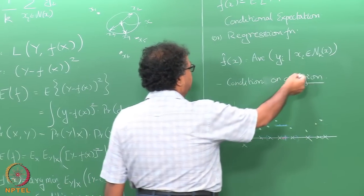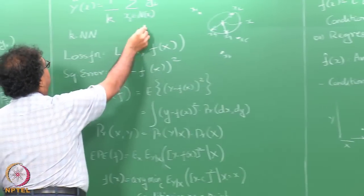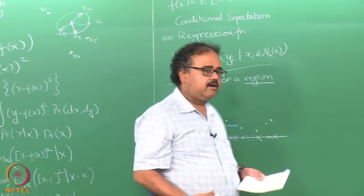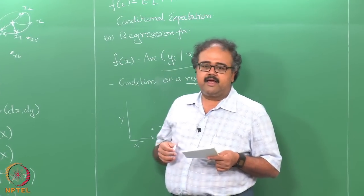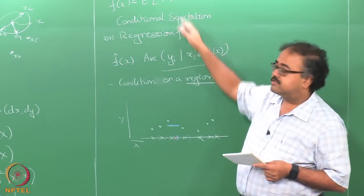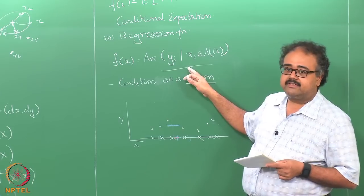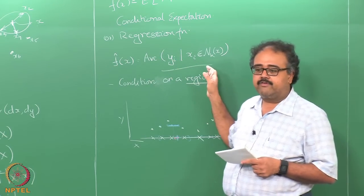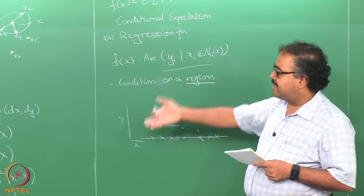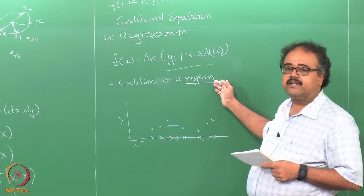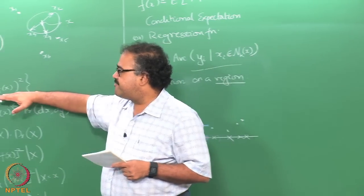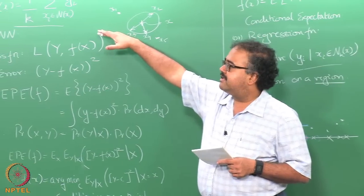So what we have derived is essentially the k-nearest neighbor classifier or regressor. Starting from the general principle of minimizing expected prediction error, and adding the condition that we average over a region assuming constant output, we naturally arrive at the KNN formulation. In some sense, minimizing EPE under local-constancy yields k-nearest neighbors.